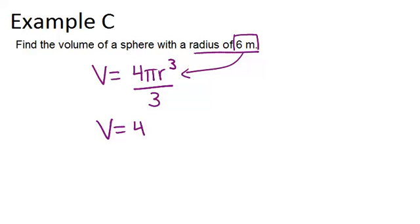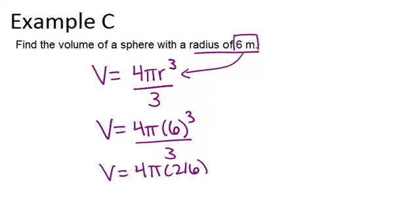So the volume is 4π times the radius, which is 6 cubed, divided by 3. In order to calculate this, I would recommend doing 6³ first, which is 216. So it's 4π times 216 divided by 3. At this point, multiply 216 times 4 and then divide by 3, and you get 288.